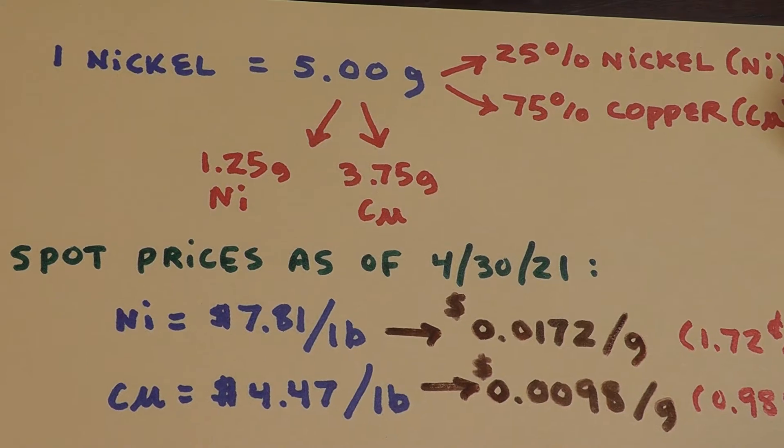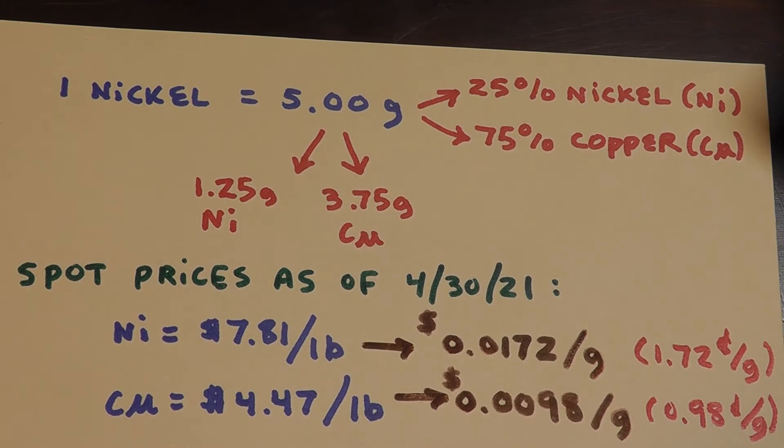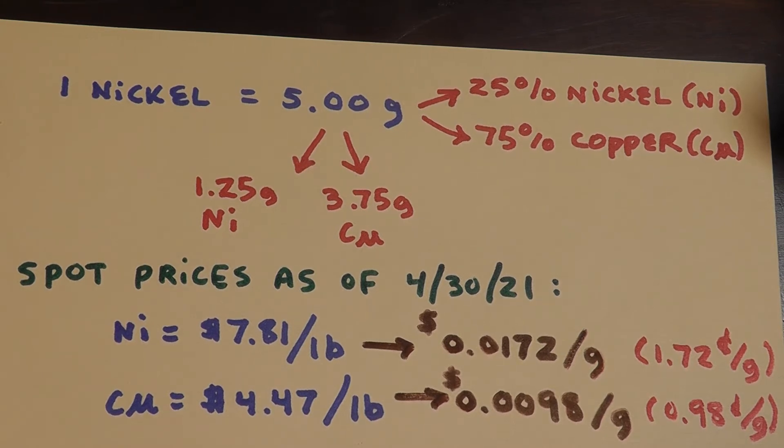As of yesterday, the spot prices of these metals are as follows: nickel is now trading for on Friday at seven dollars and 81 cents a pound. That's really kind of close to an all-time high. It spiked in 2010 or 12, something like that, as well. So that is basically 1.72 cents per gram. Copper is four dollars and 47 cents a pound, the spot price, and that is a little bit under a penny per gram. Now, so you don't think I'm making this up, here is a chart of both metals.